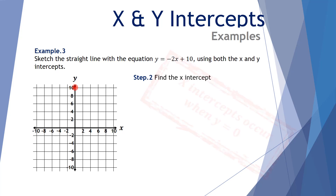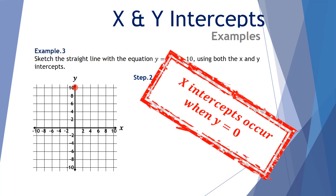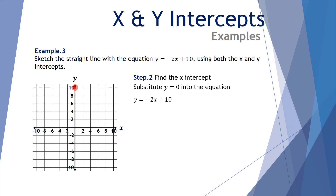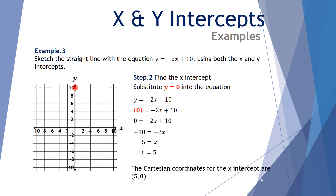Step two, find the x-intercept. The x-intercept occurs when y equals 0. So we have y equals negative 2x plus 10. Substitute in y equals 0, giving 0 equals negative 2x plus 10. Subtract 10 from both sides to get negative 10 equals negative 2x. Divide both sides by negative 2, and we're left with x equals 5. The Cartesian coordinates for the x-intercept are (5, 0).